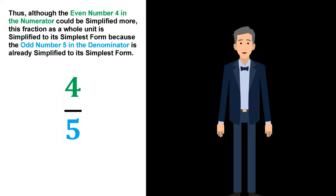Thus, although the even number 4 in the numerator could be simplified more, this fraction as a whole unit is simplified to its simplest form because the odd number 5 in the denominator is already simplified to its simplest form.